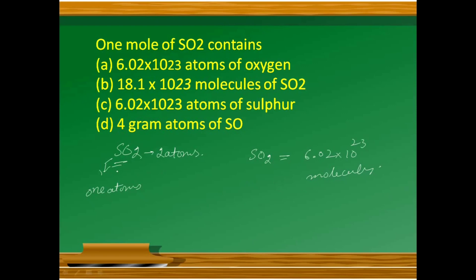Since in one molecule we have one atom of sulfur, in 6.02×10²³ molecules we have 6.02×10²³ atoms of sulfur. If we talk about oxygen atoms, it should be 2×6.02×10²³ oxygen atoms. So the right option is option C.